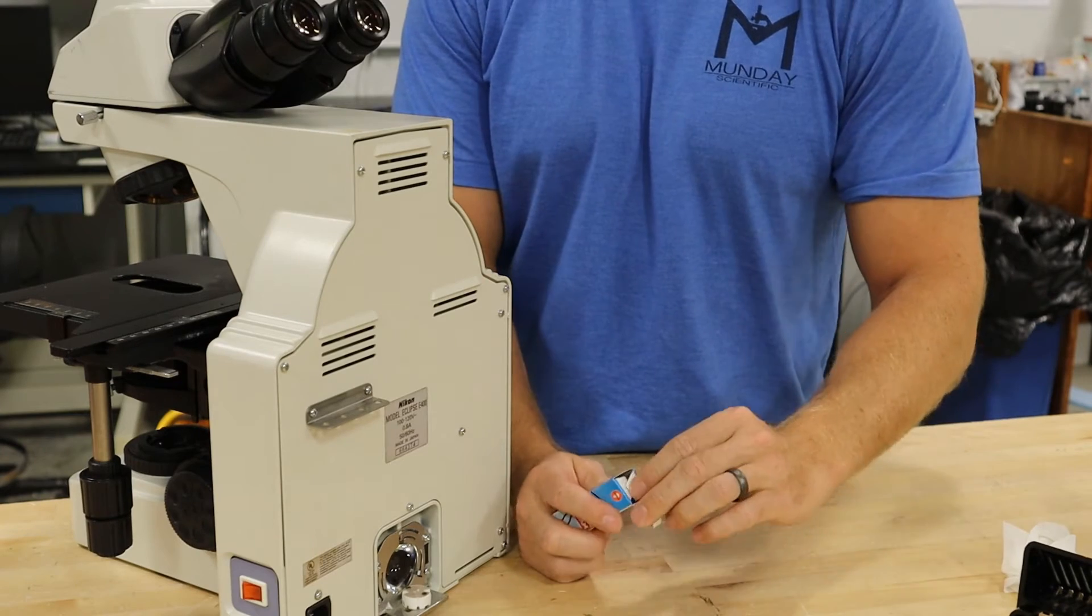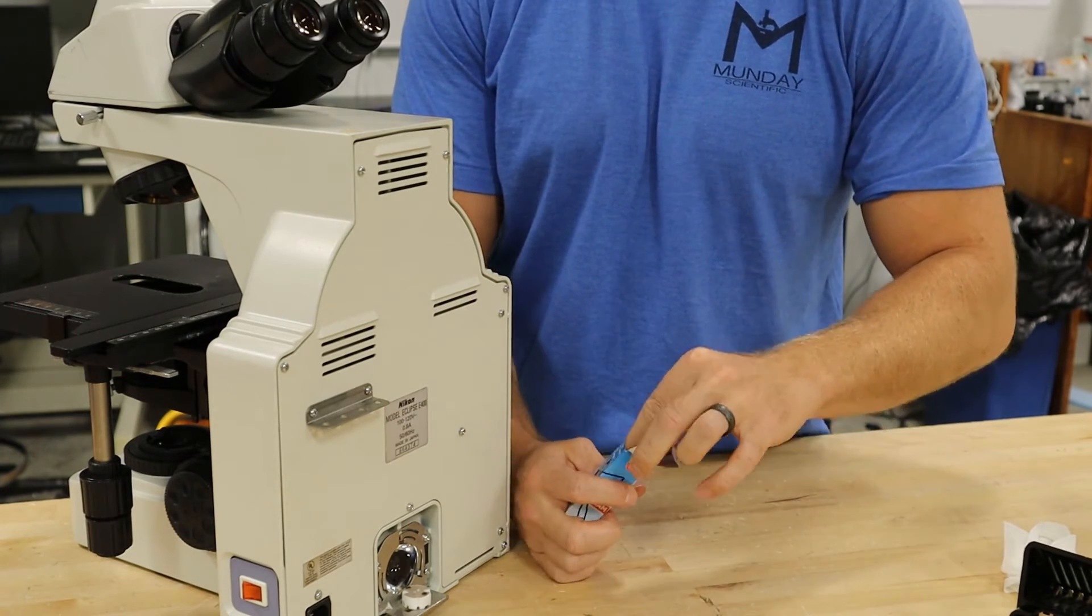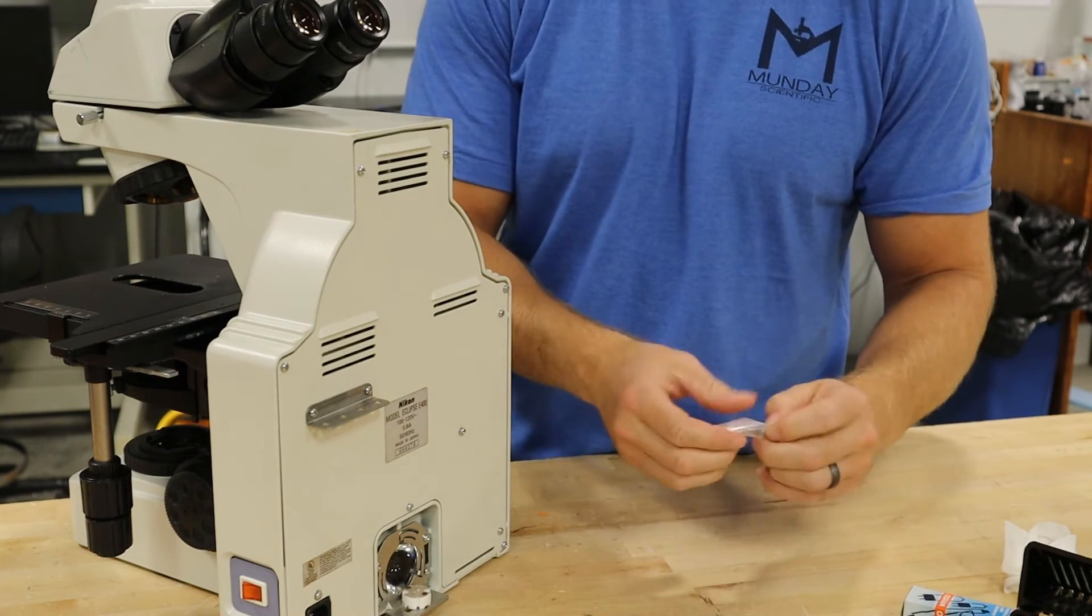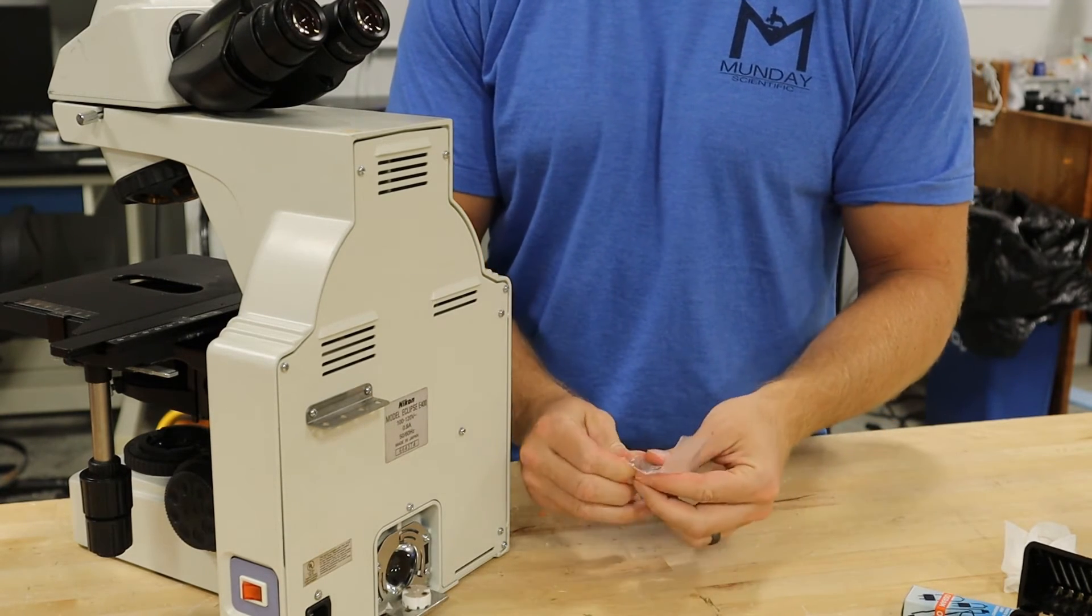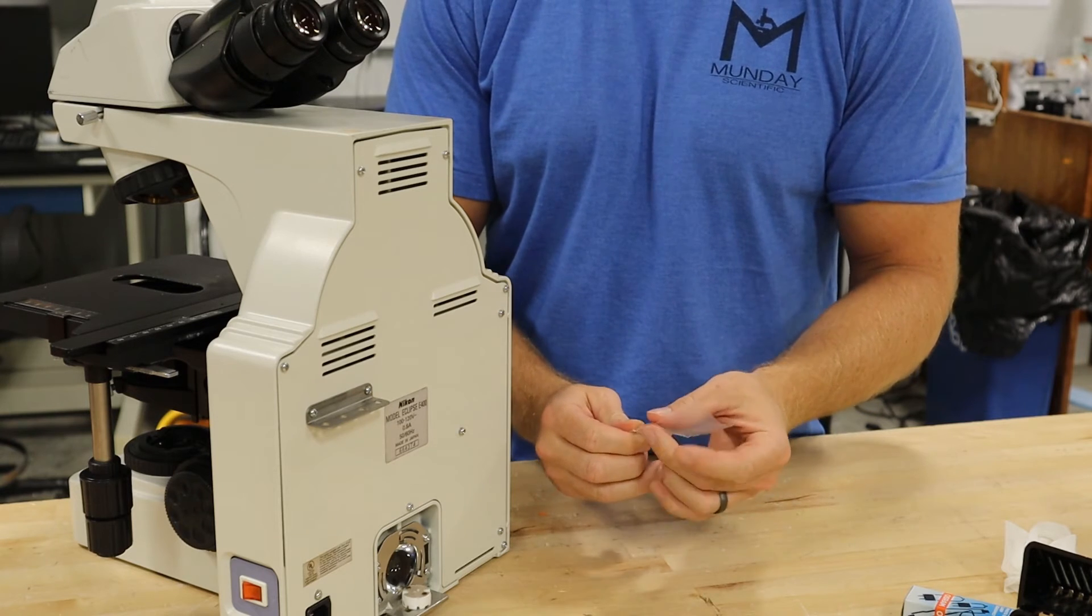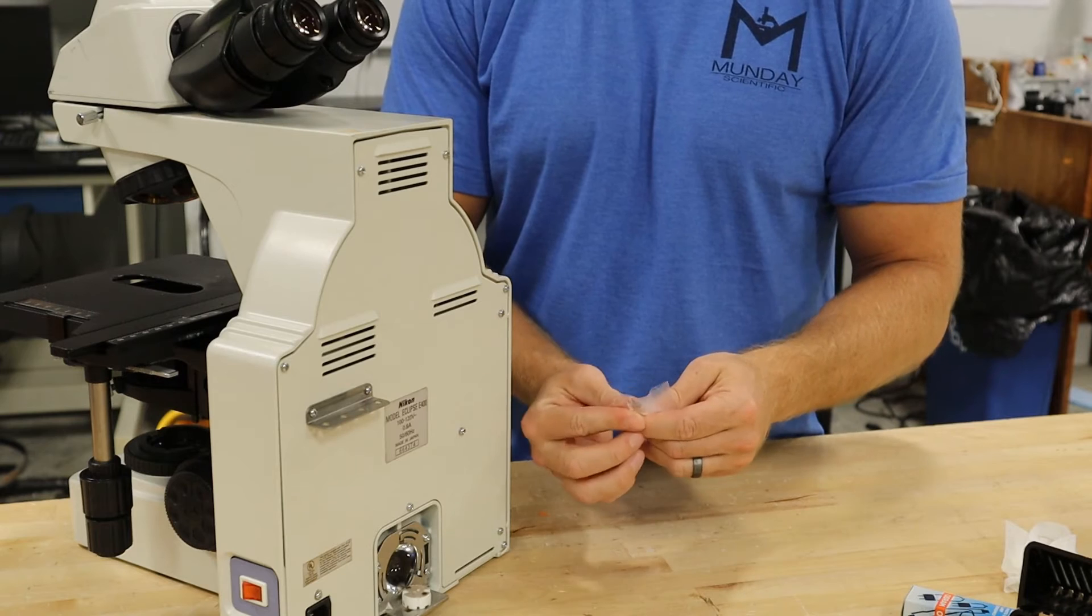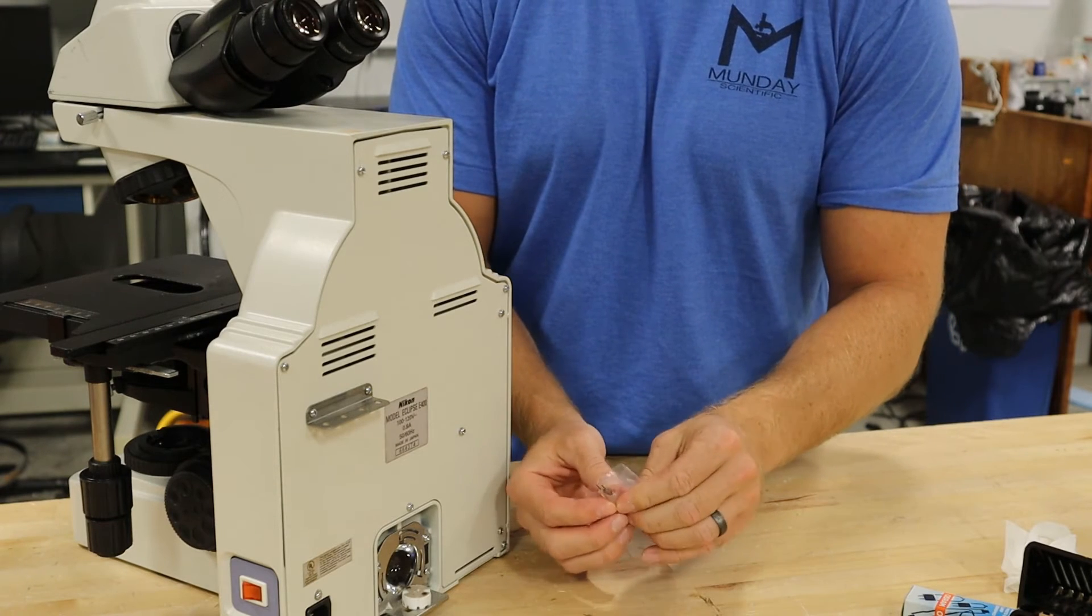Then you open the new bulb. It'll come in a plastic sleeve. You want to make sure you do not touch the bulb with your fingers. You can use a chem wipe or we like to use the plastic sleeve that it comes in.